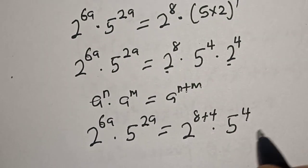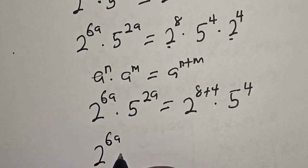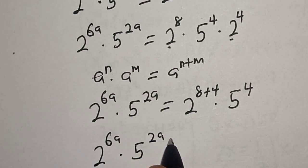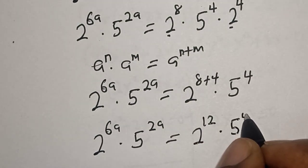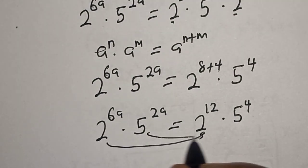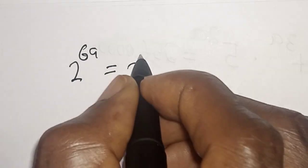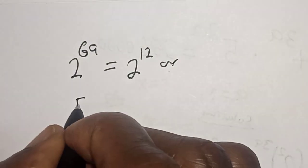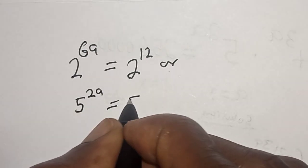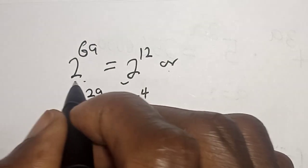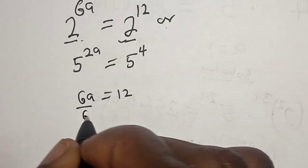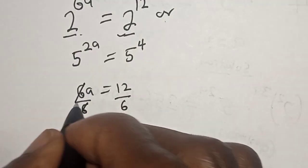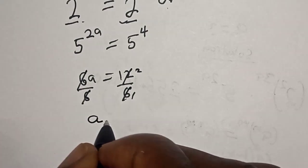Multiplied by 5 to the power of 4. Now by comparing: 2 raised to power 6a is equal to 2 raised to power 12, and 5 to the power of 2a is equal to 5 raised to power 4. Since both sides have base 2, therefore 6a is equal to 12. Dividing both sides by 6, a is equal to 2.